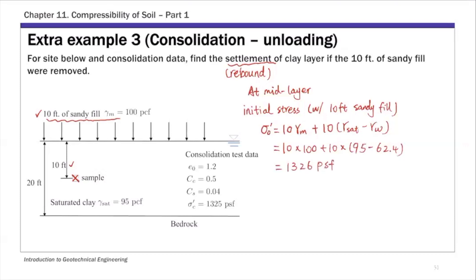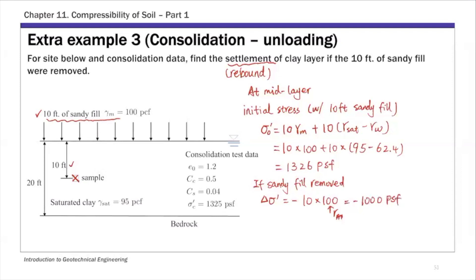If the sandy fill were to be removed, the change in effective stress is due to the removal of that sandy fill. So it's negative 10 times gamma-moist, which is 100. The stress change is negative 1000 psf, meaning we're removing 1000 psf of load.